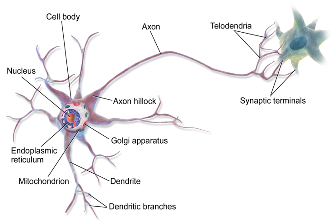Neurons are the primary components of the nervous system, along with the glial cells that give them structural and metabolic support. The nervous system is made up of the central nervous system, which includes the brain and spinal cord, and the peripheral nervous system, which includes the autonomic and somatic nervous systems. In vertebrates, the majority of neurons belong to the central nervous system, but some reside in peripheral ganglia, and many sensory neurons are situated in sensory organs such as the retina and cochlea. Axons may bundle into fascicles that make up the nerves in the peripheral nervous system. Bundles of axons in the central nervous system are called tracts.